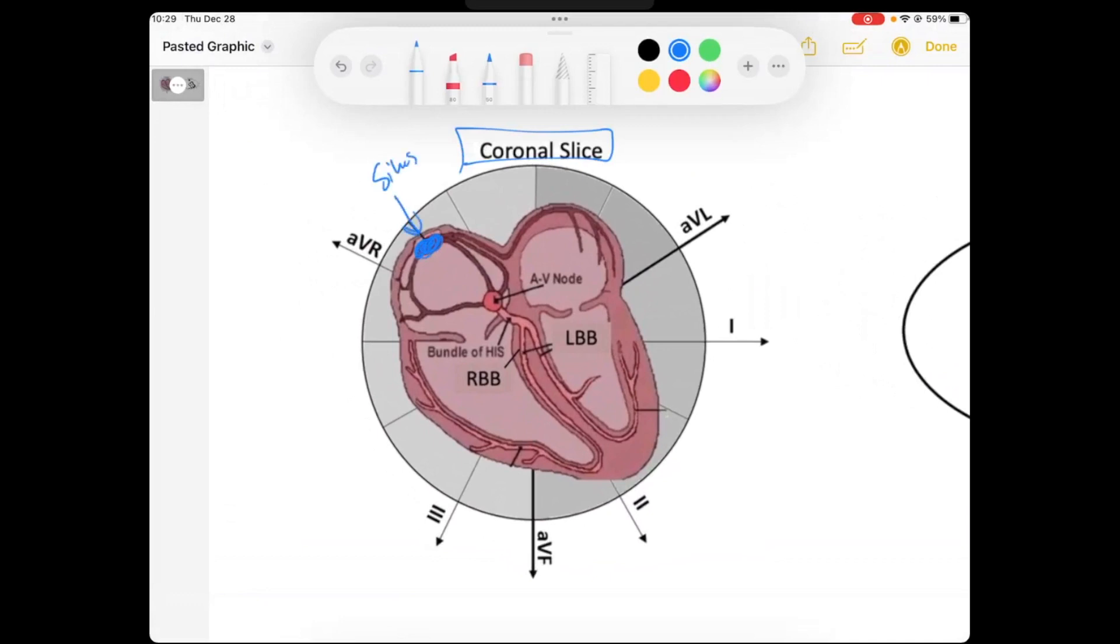And this is located in the top right of our heart anatomically. So, when this fires off, it causes a wave of atrial depolarization across our atria that is going down to the left.